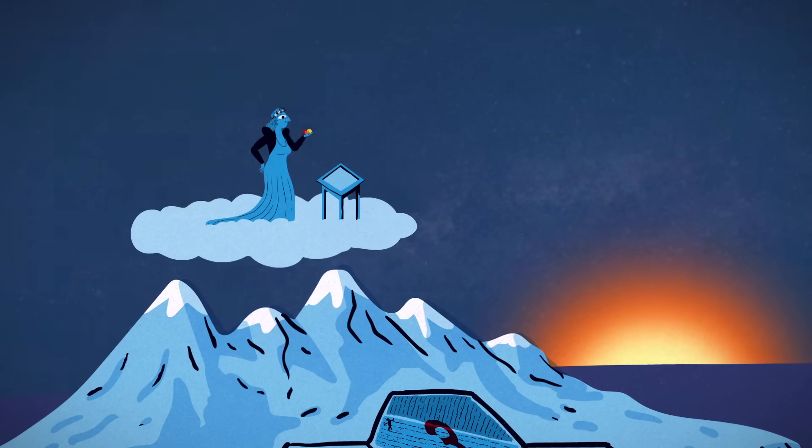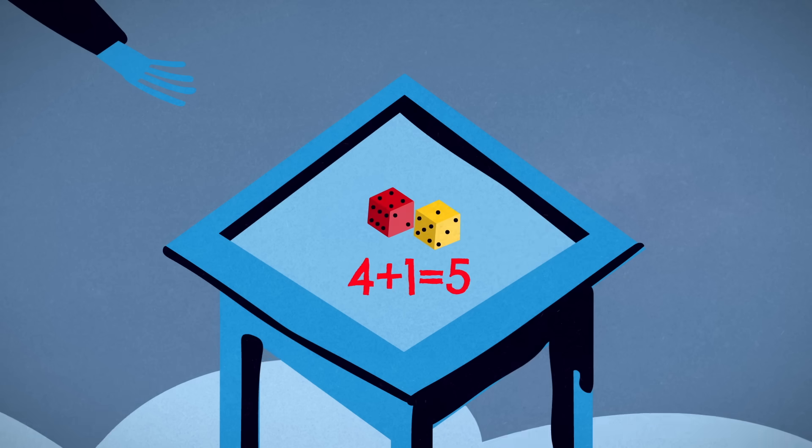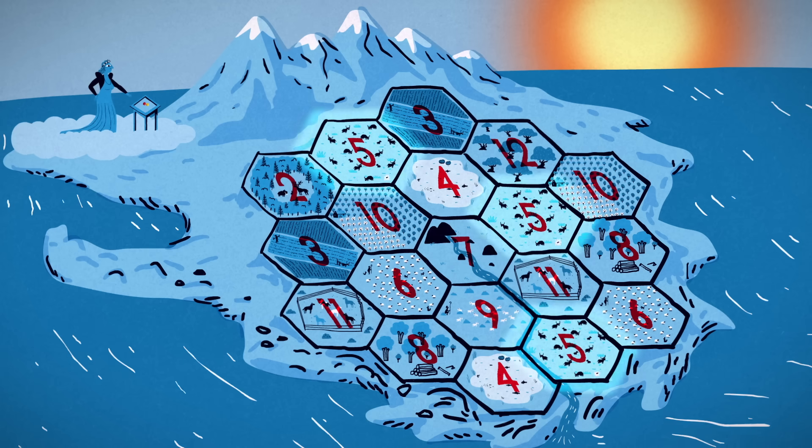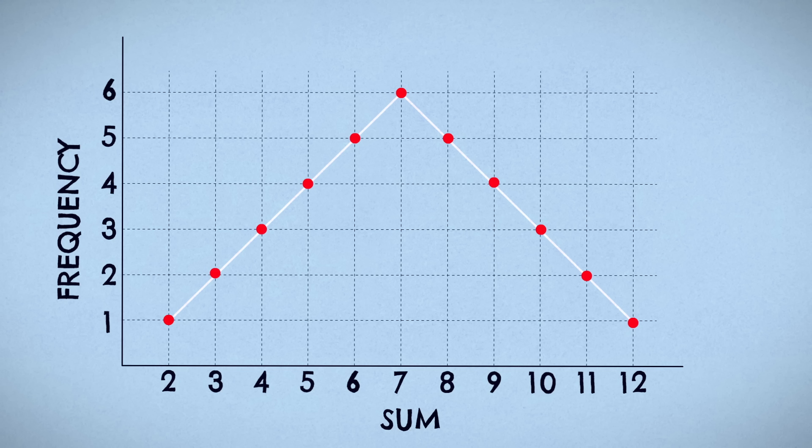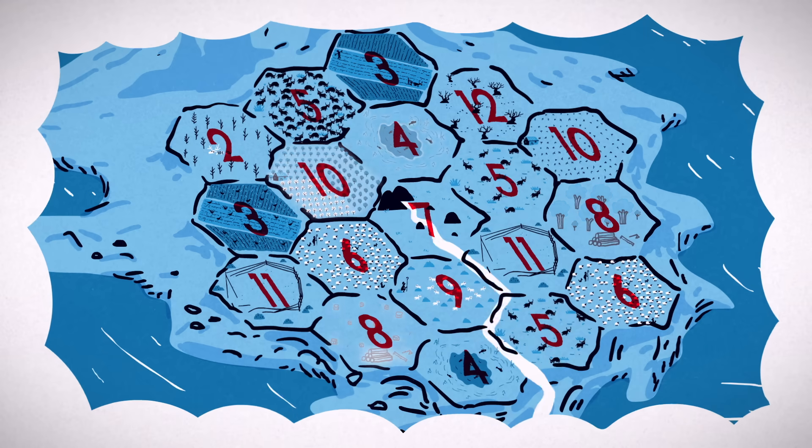Every day you roll the dice at dawn, and all lands that match the sum of the two dice produce their resources. The resulting frequency of sums across the season keeps your land in perfect harmony.